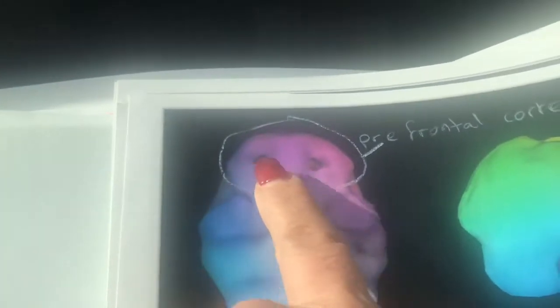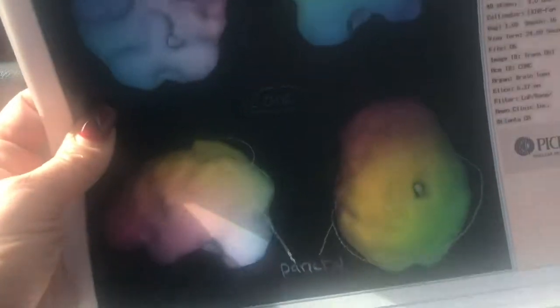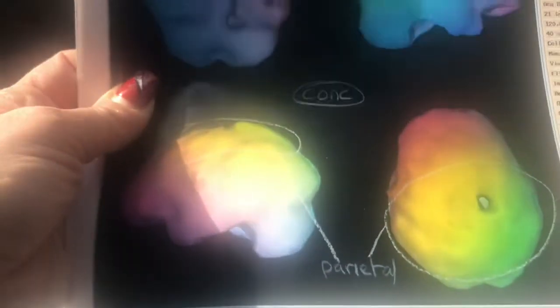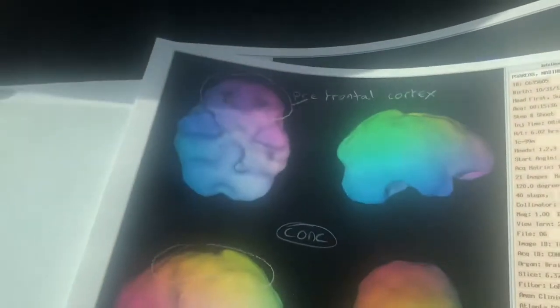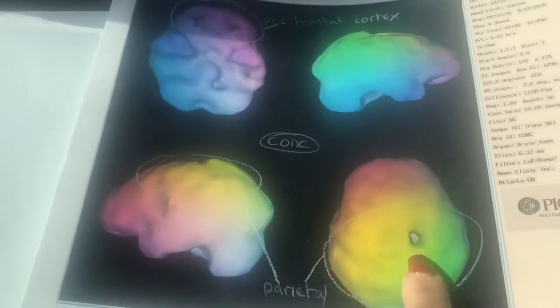What the holes mean is that there's a lack of blood flow in that area. Blood is not flowing in that area, and there's lots of dents inside there where blood is not flowing.